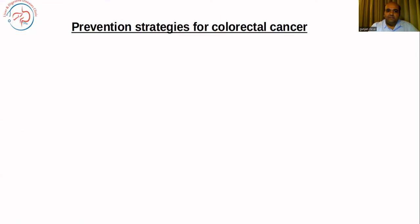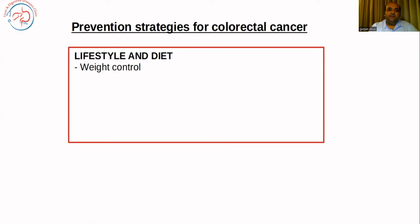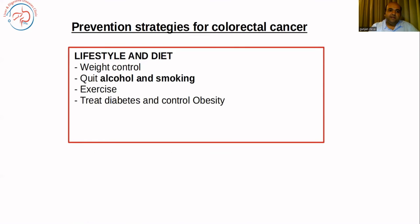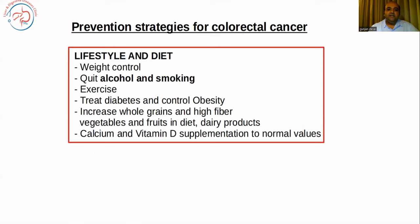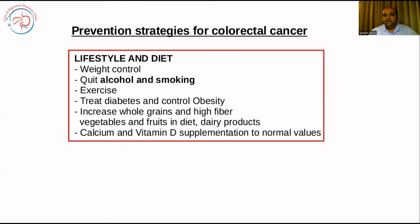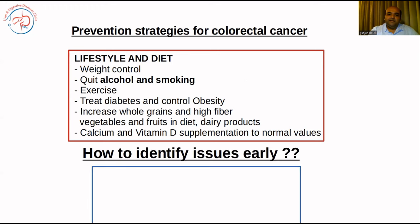What are the prevention strategies for colorectal cancer? As already discussed, lifestyle and dietary measures are key: quit alcohol and smoking, increase whole grains and high fiber in your diet, eat vegetables, fruits, and dairy products, and maintain calcium and vitamin D supplementation to normal values. All these factors have been studied to help prevent or at least reduce the risk of colorectal cancer.